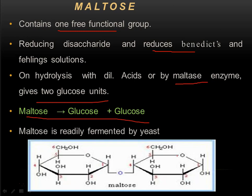To summarize the structure of maltose: a glycosidic linkage is formed between C1 and C4 by the removal of a molecule of water, both units are glucose, and the free functional group of the second glucose is what makes it a reducing sugar.